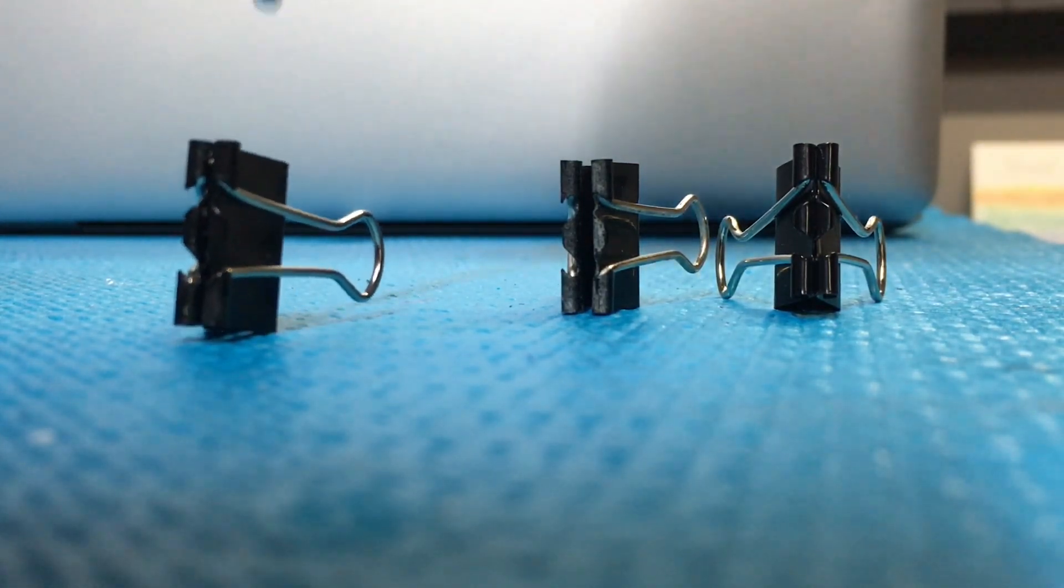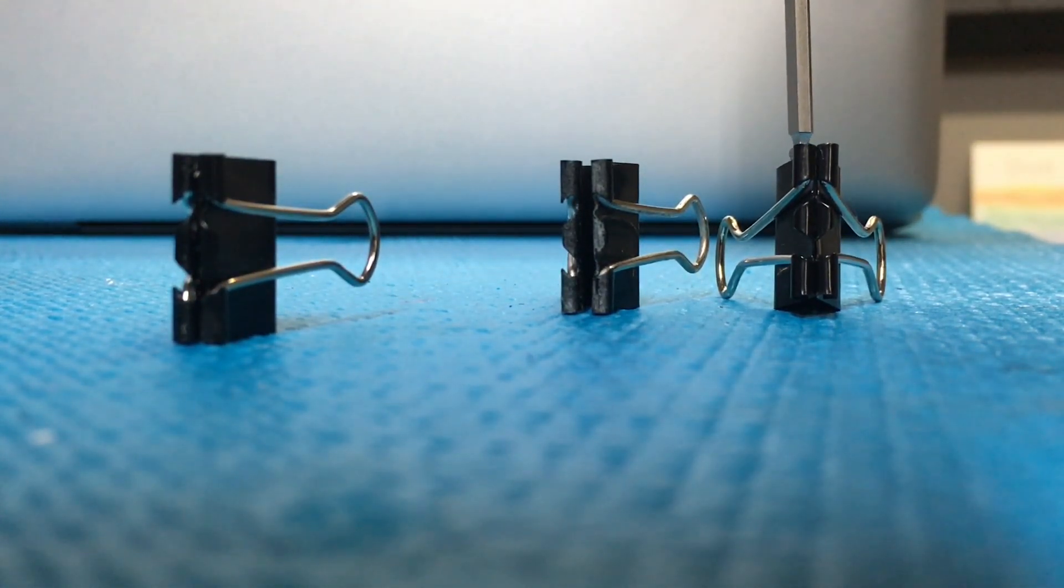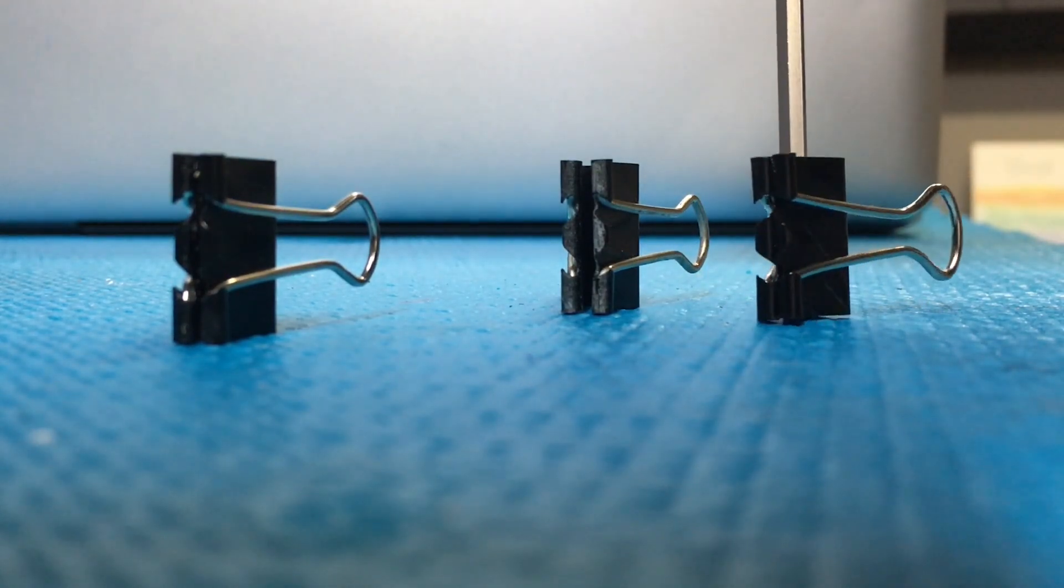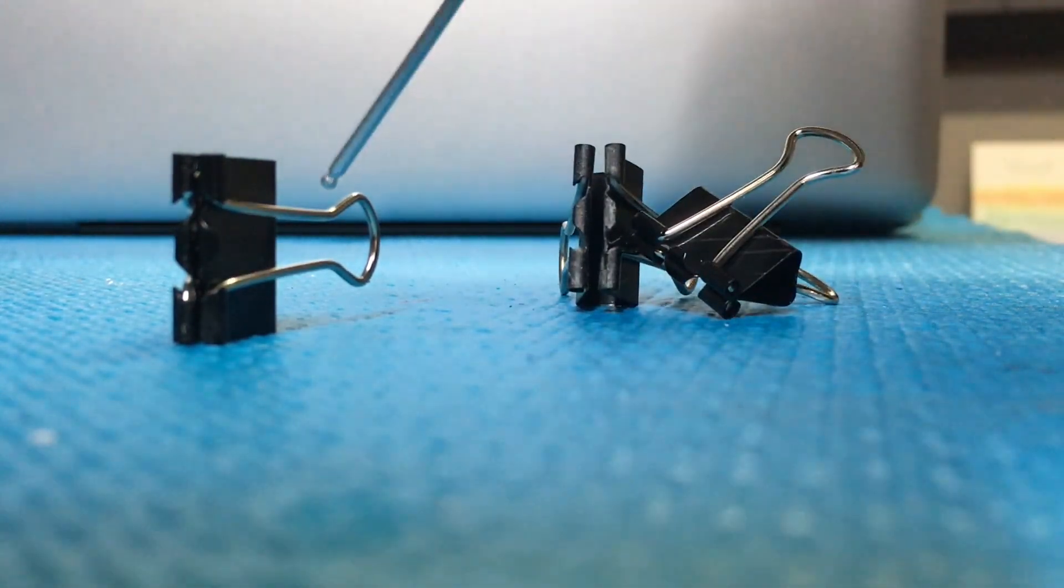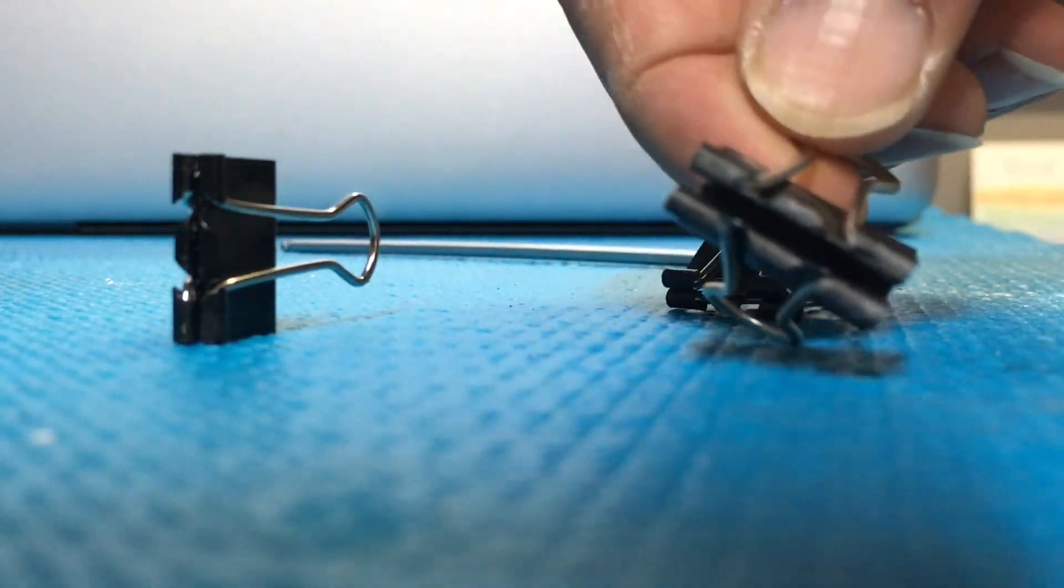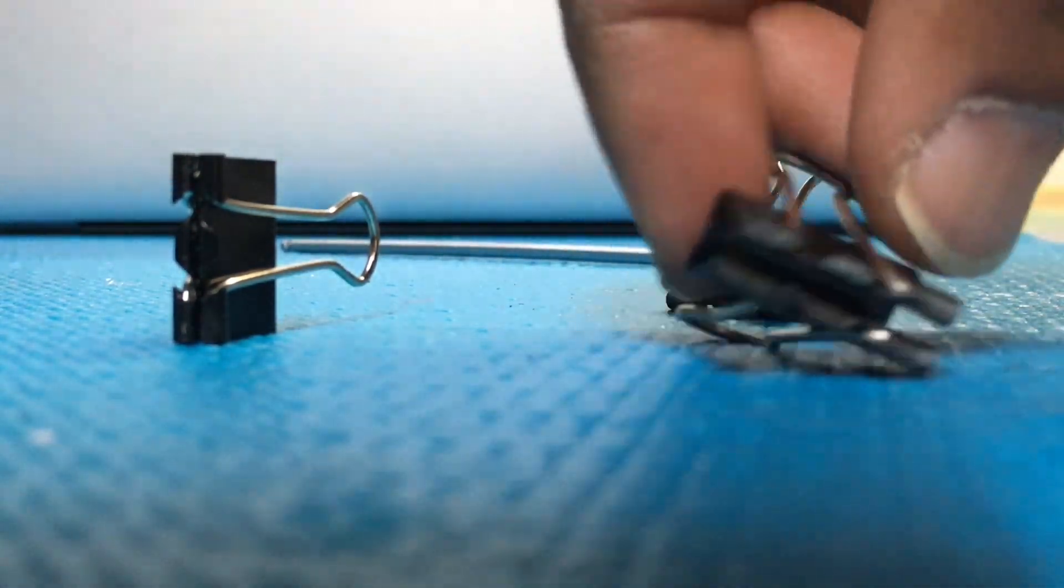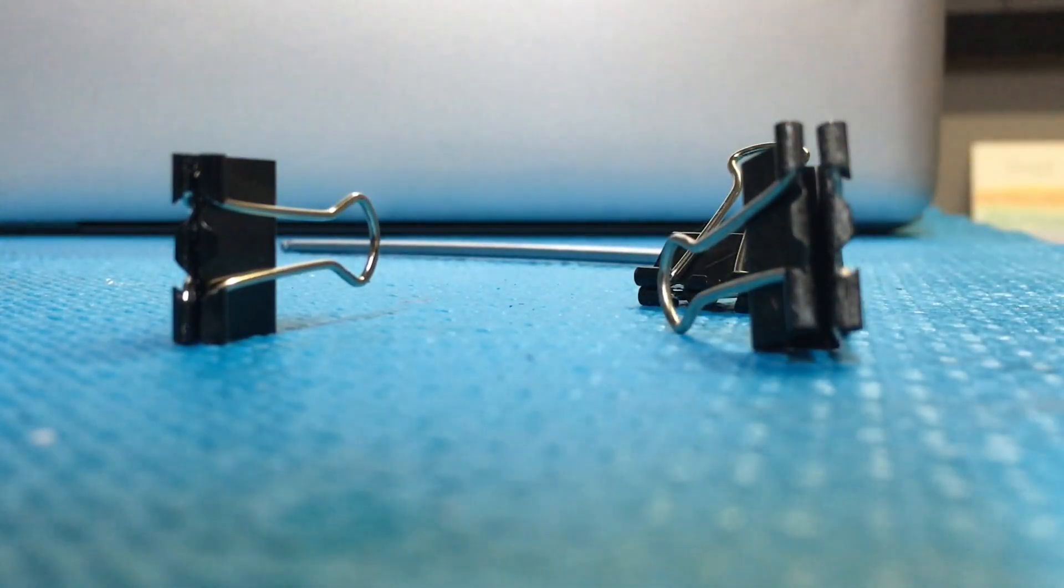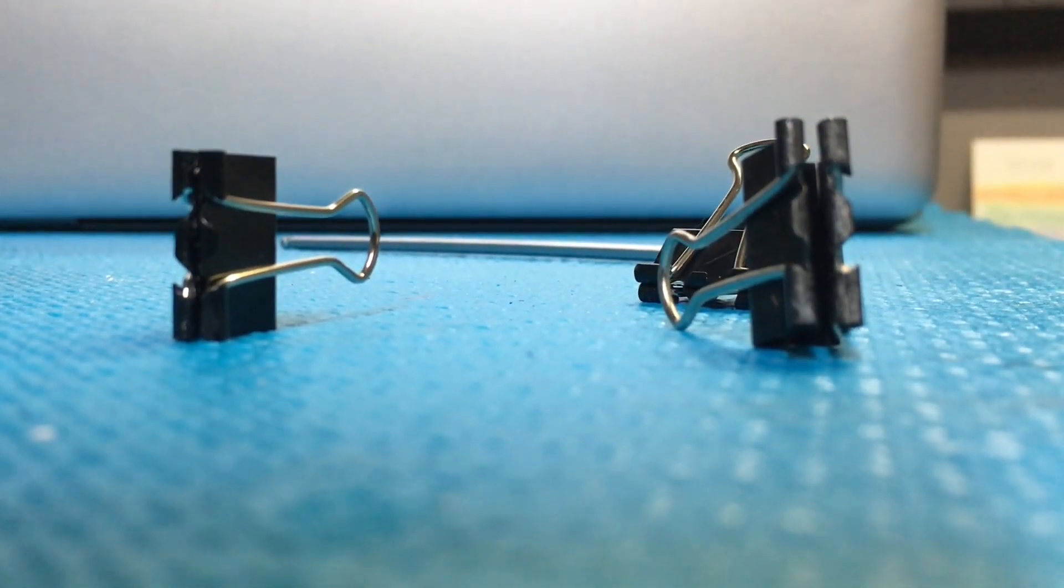But I would recommend that you go ahead and get these replaced. Another thing you might want to check for guys is a side note. Check your nozzle. If your nozzle is loose, which it does happen, you will also get layer shift and you'll get brittle prints as well. But there's a very simple fix for this. So you guys are wondering what it is? Here it is.